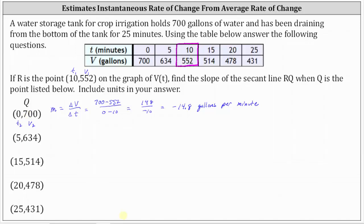Now we change point Q so that T₂ = 5 and V₂ = 634, and find the slope of the secant line passing through R and this new Q. V₂ − V₁ = 634 − 552 = 82, and T₂ − T₁ = 5 − 10 = −5. Simplifying: 82 ÷ (−5) = −16.4 gallons per minute.